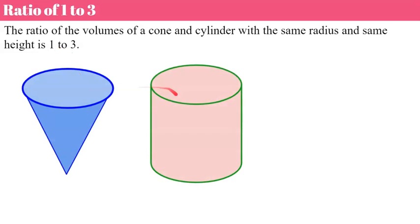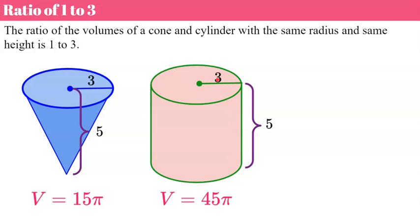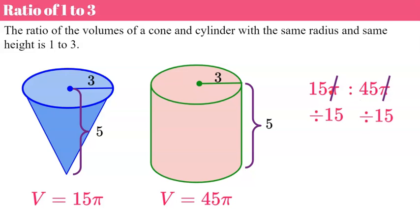The ratio of the volumes of a cone and a cylinder with the same radius and height is one to three. For example, with a radius of three and a height of five, the cone's volume is 15π and the cylinder's volume is 45π — because radius squared (3×3=9) times height (5) equals 45, times π. Writing the ratio 15π to 45π, dividing by π and then by 15, gives us one to three. The volume of the cylinder is three times that of the cone, or the cone is one-third the volume of the cylinder.